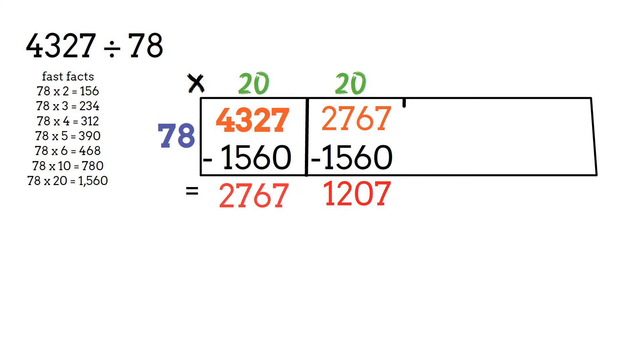The number is getting smaller and smaller. Divide again. 78 goes into 1207 about 10 times. We have 427 left over.